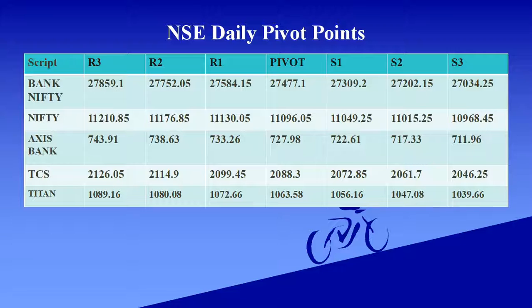TCS. The pivot level is 2,088. Support level ranges: 2,072 and 2,046. Resistance level ranges: 2,099.